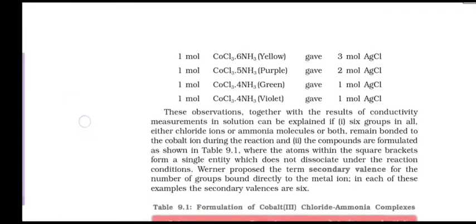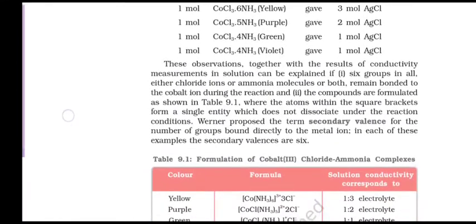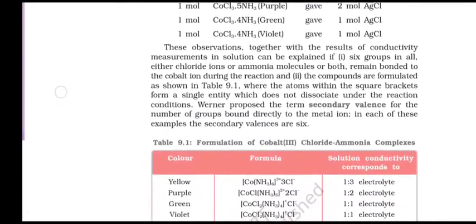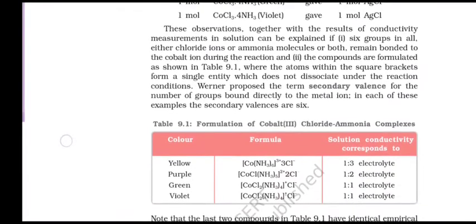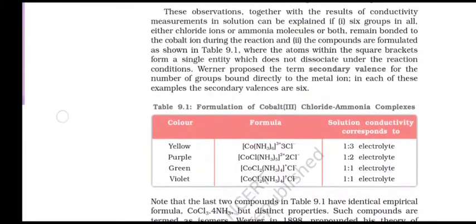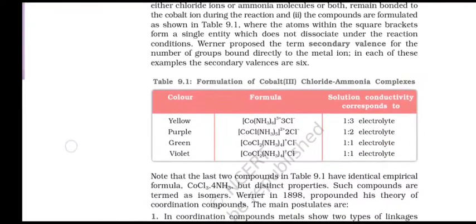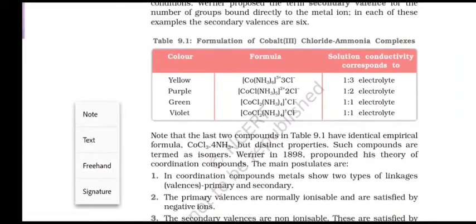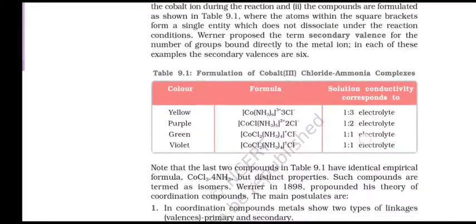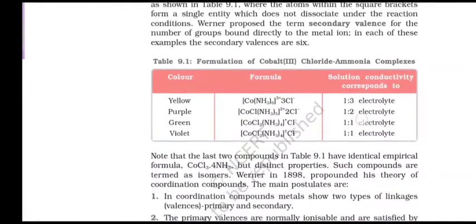1 mol CoCl3·6NH3 gave 3 mol AgCl. These observations together with the results of conductivity measurements in solution can be explained if 6 groups in all — either chloride ions or ammonia molecules or both — remain bonded to cobalt during the reaction, and the compounds are formulated as shown, where the atoms within the square brackets form a single entity which does not dissociate under the reaction conditions.